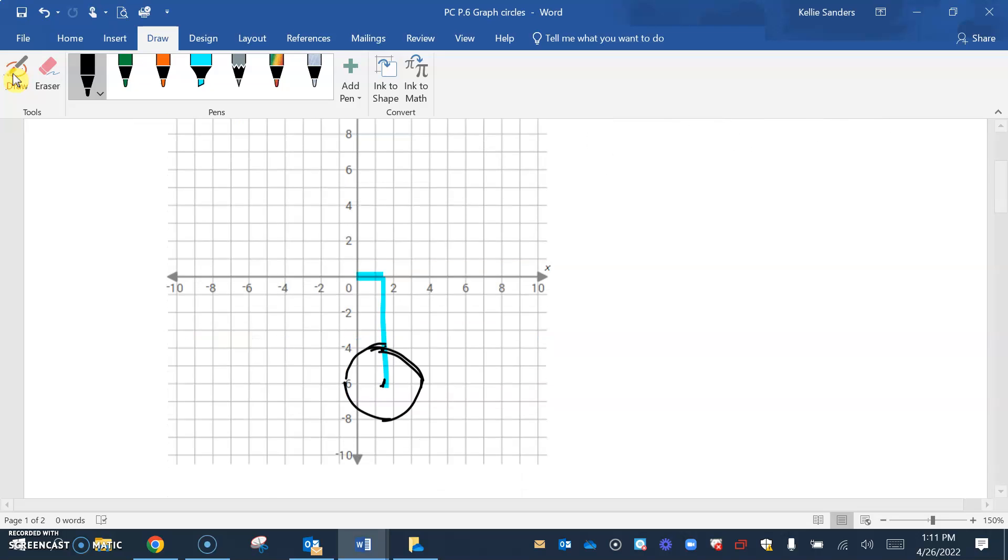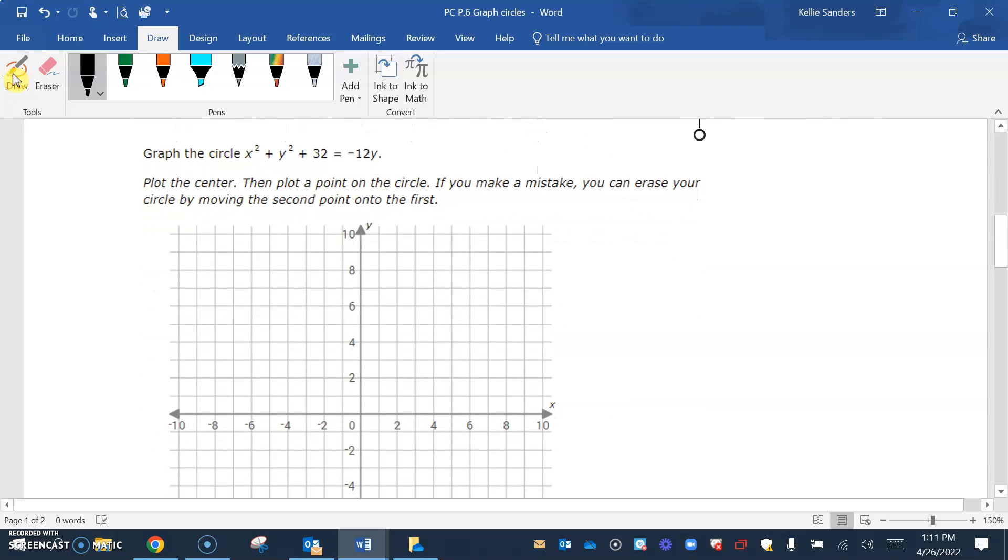A lot easier to do it on IXL than it is to draw it. Okay, now we're going to have to complete the square to be able to find the center and the radius. So we are going to keep these on one side and then this one on the other.